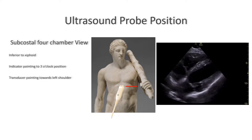You should be getting an image looking like this, with all four chambers fully visible. To optimize the image, you may have to ask the patient to relax their abdominal muscles by flexing his or her knees. You may also further improve the view by acquiring it during held inspiration.